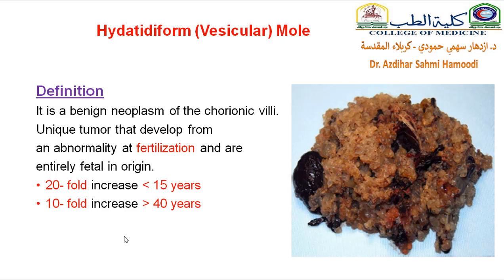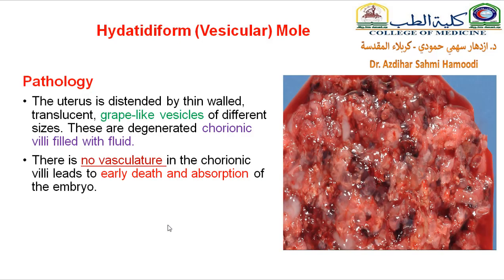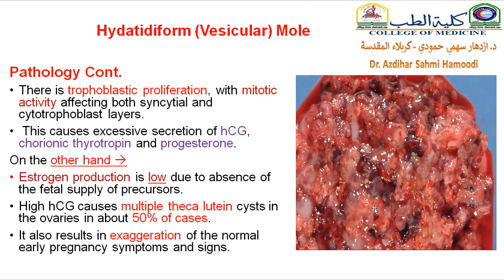This type of pregnancy is increased 20-fold in a very young age group — 15 to 16 years and younger — and 10-fold in the elderly age group of 40 years and older. The uterus is distended with thin-walled translucent grape-like vesicles of different sizes, from degenerated chorionic villi filled with fluid, with no vasculature. That is why there will be early death and absorption of the fetus. There will be trophoblastic proliferation due to increased mitotic activity, affecting both syncytial and cytotrophoblast cells, which are precursor cells of the placenta.